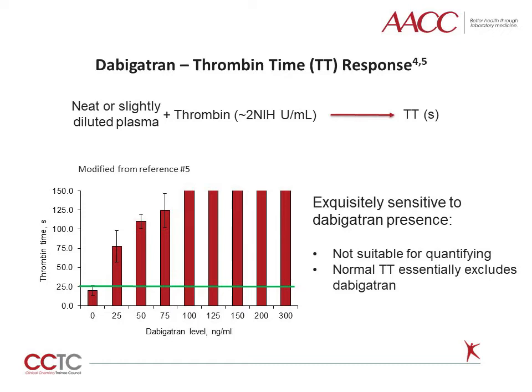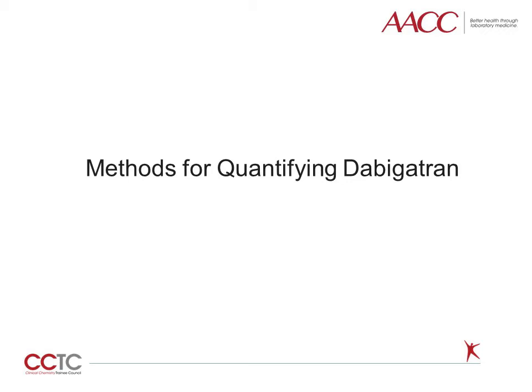The thrombin time is able to determine drug presence, although prolongation of the thrombin time is not specific for Dabigatran. Thrombin time prolongation can also be secondary to heparin, parenteral direct thrombin inhibitors such as argatroban, and low or dysfunctional fibrinogen levels. To recap, Dabigatran in a patient sample can be determined using the thrombin time, although prolongation is not specific for Dabigatran. A normal PT and/or APTT cannot exclude the presence of Dabigatran.